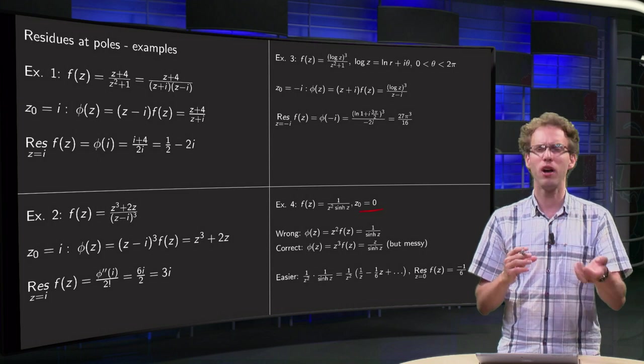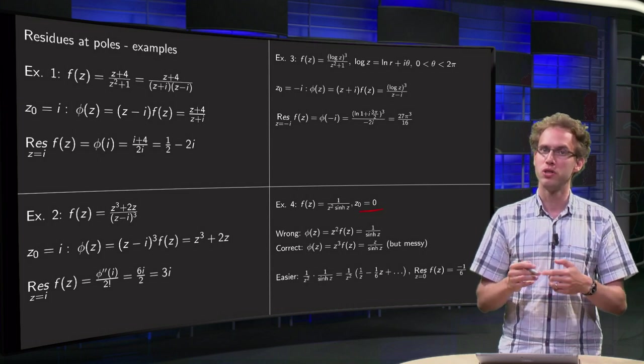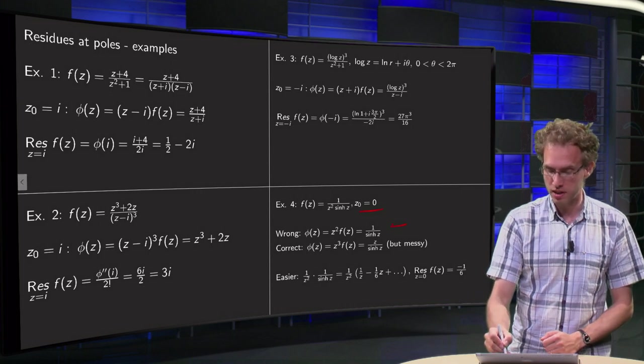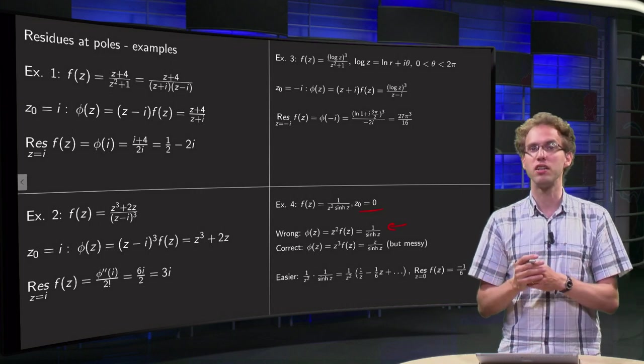You look at the function and you think, well, it looks like a second order pole. So, I multiply by z squared and I get here my phi of z. And, then I plug in z equals 0.